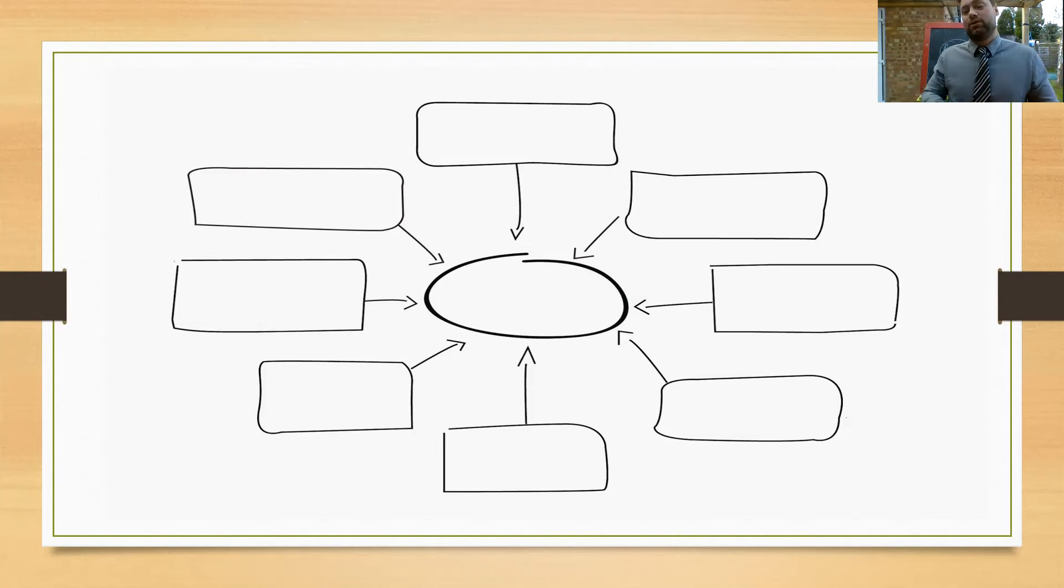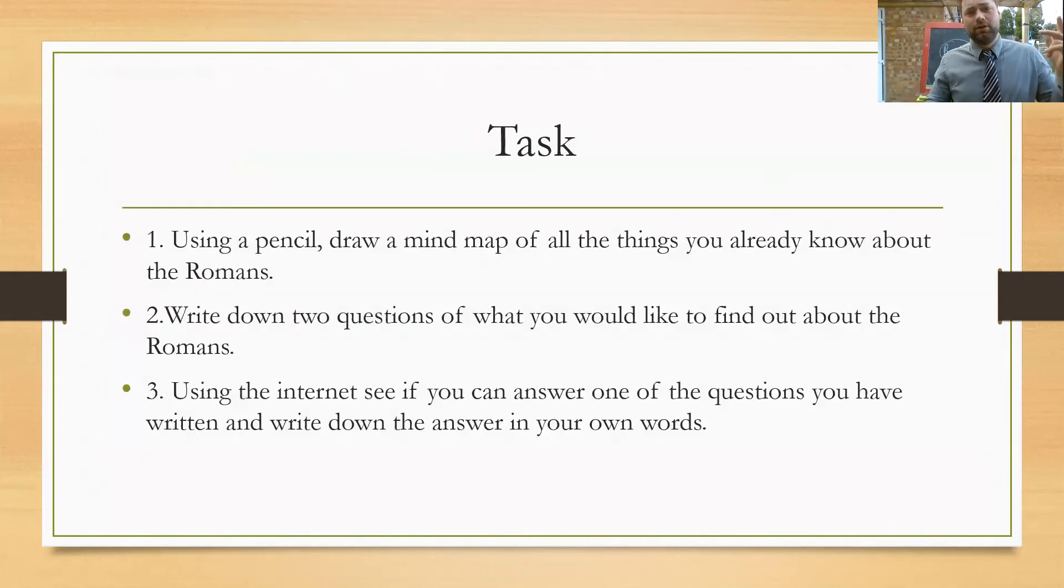So your task is to draw a mind map of all the things that you already know about the Romans. Challenge two: write down two questions about what you would like to find out about the Romans. It can be any questions you like - for example, it could be 'Did the Romans invent cars?' or 'Did the Romans make the roads?' or 'How did the Romans make roads?' Any questions you like about the Romans. Then using the internet I want you to answer just one of your questions for challenge three and write it down in your own words. You don't have to use the internet - you can use a book as well if you've got that at home.